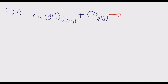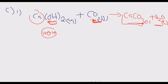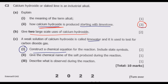...calcium carbonate (solid) plus water (liquid) is formed. The oxygen from the hydroxide reacts with carbon dioxide to form the carbonate ion, which combines with calcium to give calcium carbonate. The two hydrogen atoms form water. The equation is already balanced: one carbon on each side, and four oxygen atoms on each side.